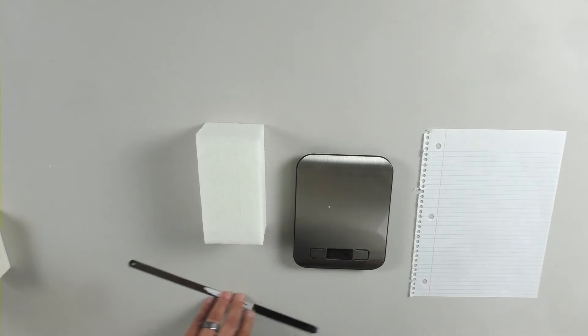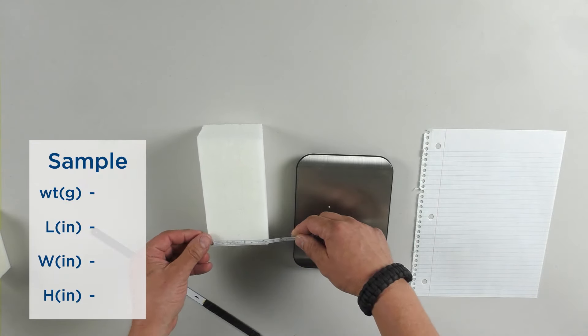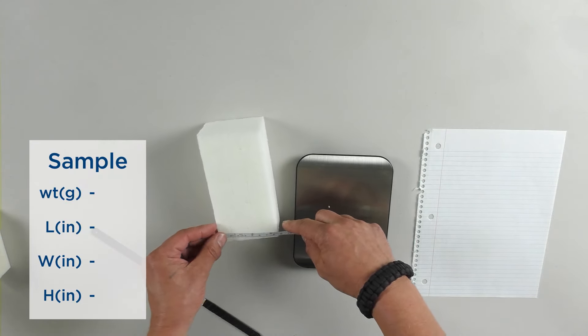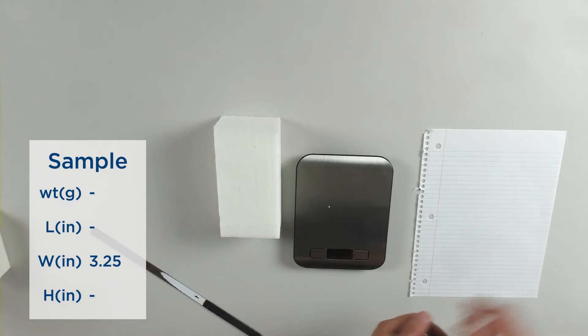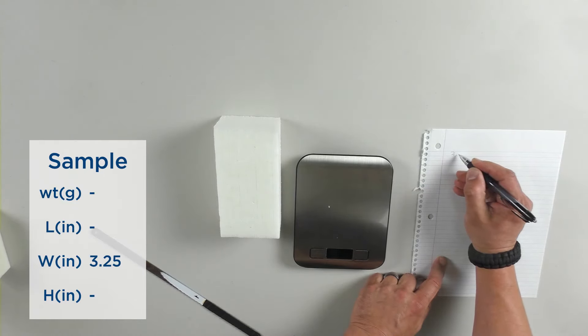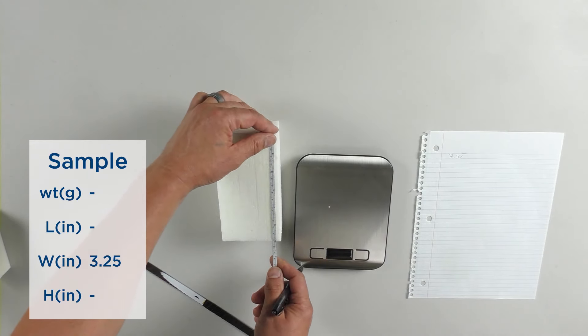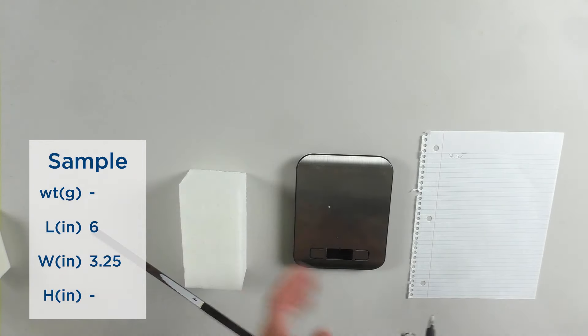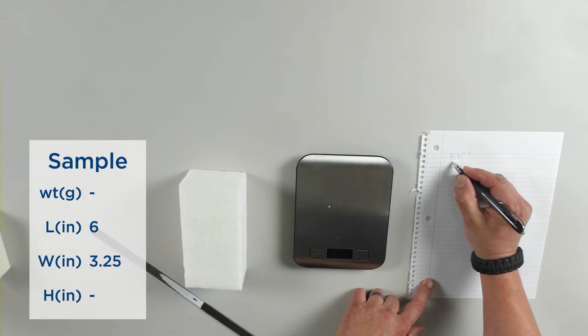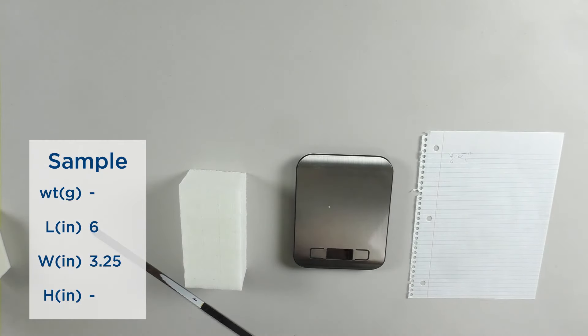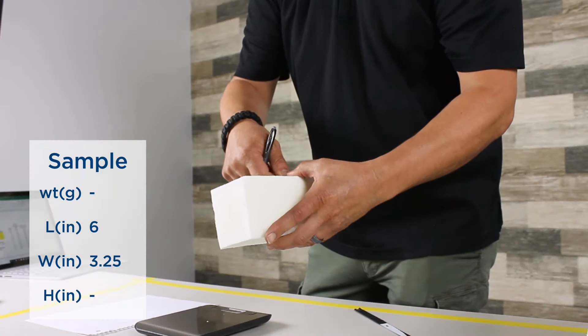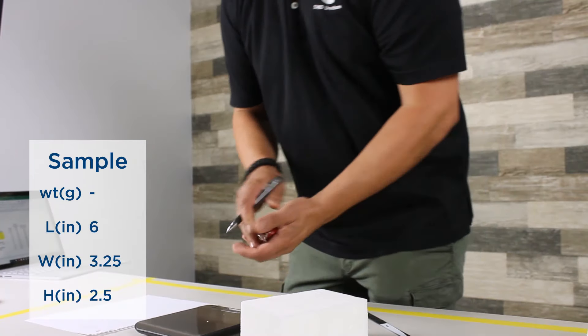After you take the sample, you measure. Start with the width, which is about three and a quarter inches. The length is six inches, and the height is two and a half inches.